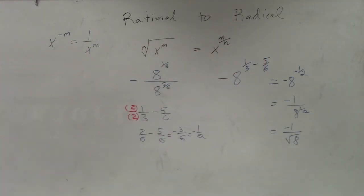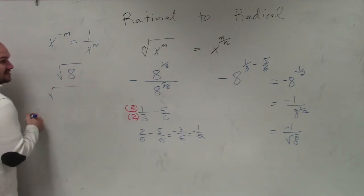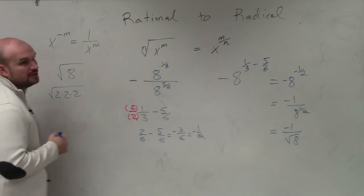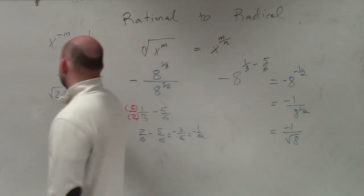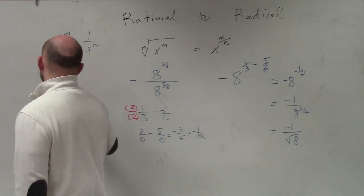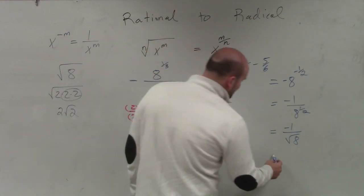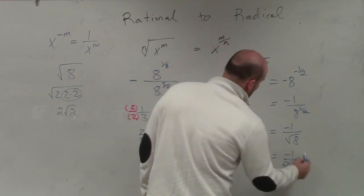And then, lastly, as we discussed in class, you guys should know that the square root of 8, if you remember the prime factorization of the square root of 8, is 2 times 2 times 2. Right? And what we worked on when I wasn't here was taking out your pairs of numbers, and that really becomes 2 square root of 2. So your final answer is negative 1 over 2 square root of 2.